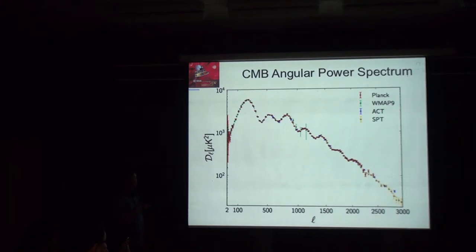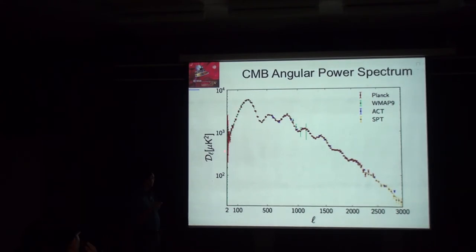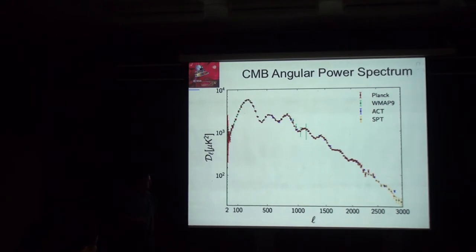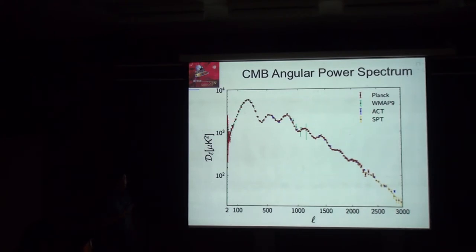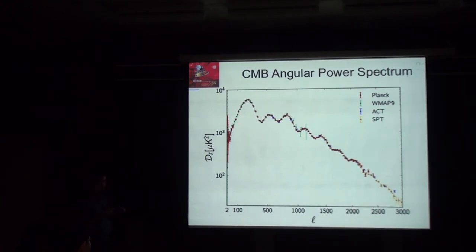The first peak in the power spectrum corresponds to that special scale at 300,000 years — the acoustic scale in the CMB. Then you see all the harmonics of that peak. We've now measured one, two, three, four, five, six, seven, eight, and maybe nine of these harmonic peaks — a series of harmonics of the fundamental scale, which is the size of the universe when it was 300,000 years old. The spectrum has some shape to it, not flat, and we can use the details of the peak structure to probe the early universe — measuring what the universe is made of, measuring the sound speed.